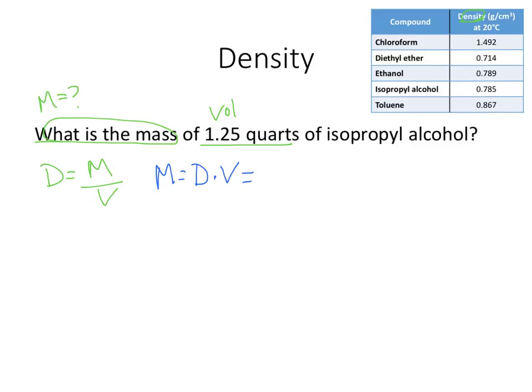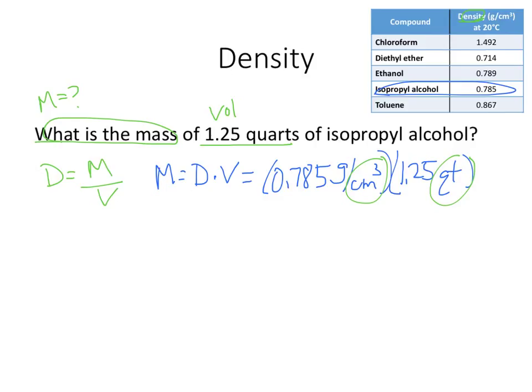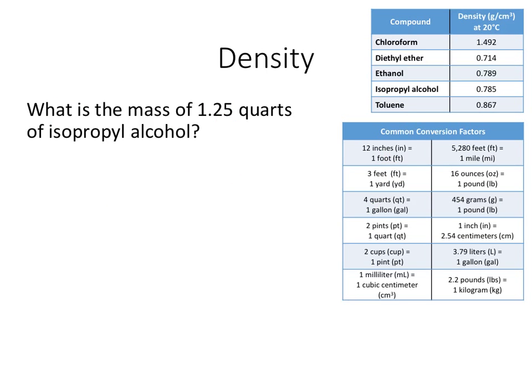Density for isopropyl alcohol is 0.785 grams per centimeter cubed, and the volume is 1.25 quarts. So it looks like all I have to do is multiply those. Problem is when I'm looking at my units, these are not the same. Centimeters cubed and quarts are not the same thing, so they're not going to cancel. So I need a way to convert either quarts to centimeters cubed or centimeters cubed to quarts. So let's look back at that conversion chart you got earlier. So again, same problem. What is the mass is equal to density times volume, but this time I'm going to change the 1.25 quarts to centimeters cubed. That way the units will match.